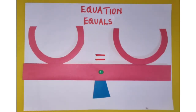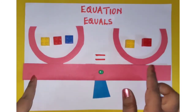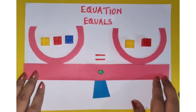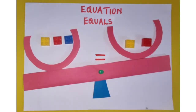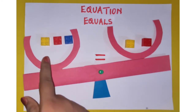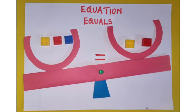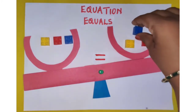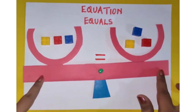Let me place some blocks in this weighing scale. You see there are some blocks placed in this weighing scale. The scale is unbalanced because we have three blocks on one side and two on the other side. So if I add one to the other side, the scale will get balanced.